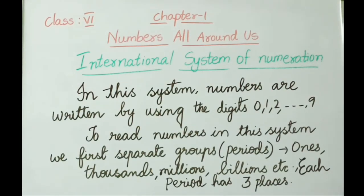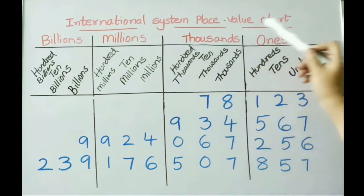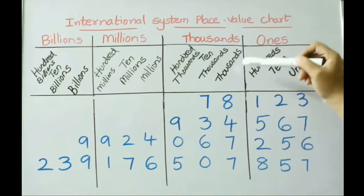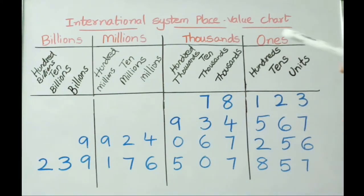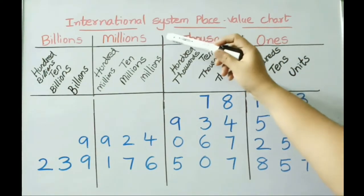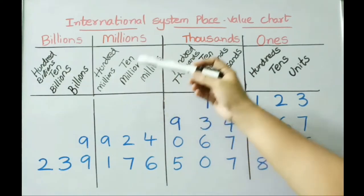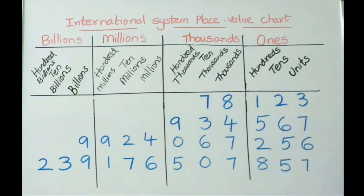Let us see the place value chart in the International System of Numeration. Under the ones period: ones, tens, hundreds. Under the thousands period: thousands, ten thousands, hundred thousands. Under the millions period: millions, ten millions, hundred millions. Under the billions period: billions, ten billions, hundred billions.